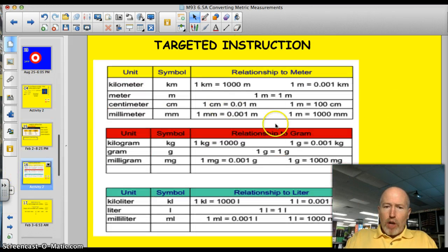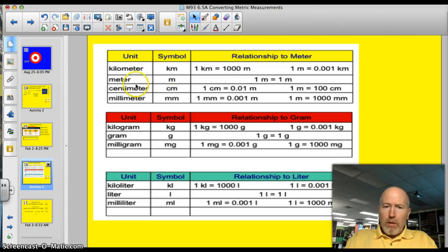I also put together a little chart for you that you'll see throughout. It talks about a kilometer. There's the symbol for it. And it also will show that one kilometer is equal to 1,000 meters. And one meter equals .001 kilometers. So for each base unit, I made one of these little charts.